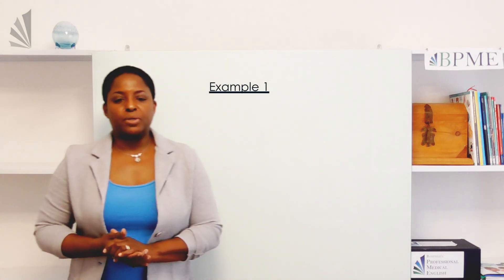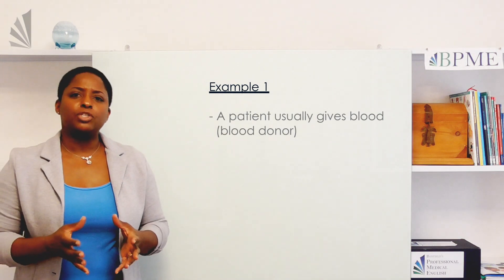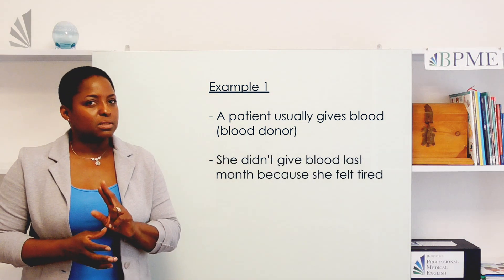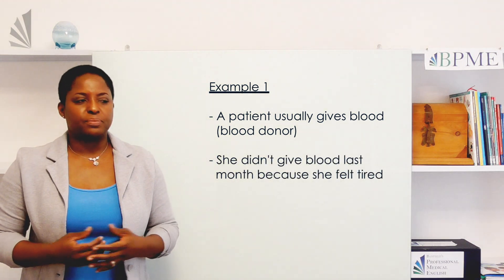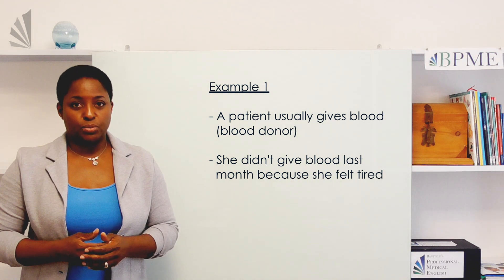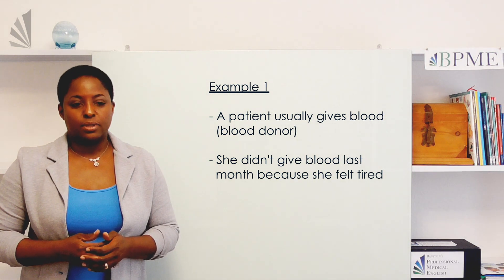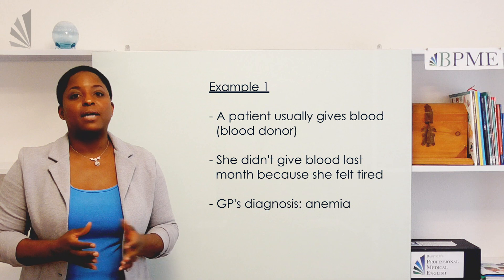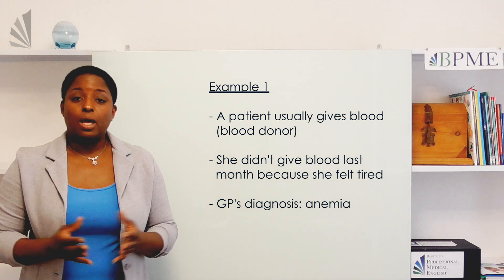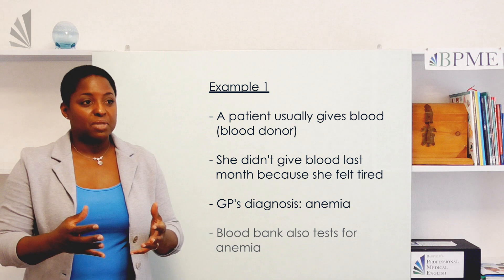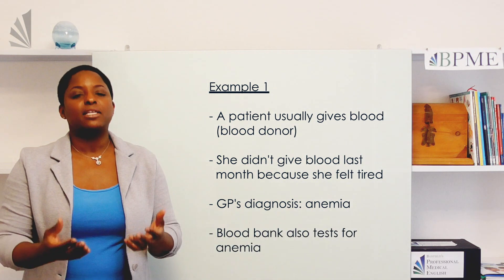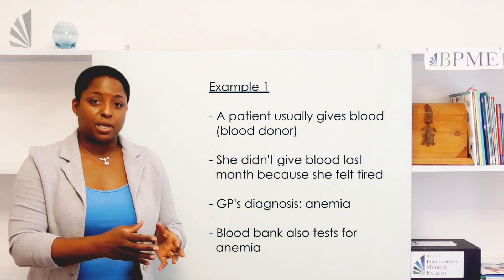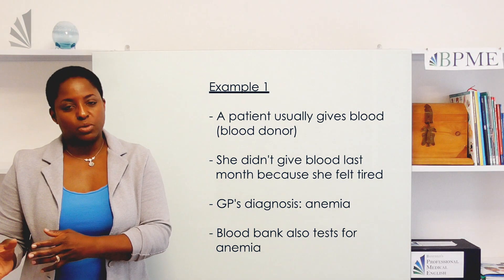So let's try an example. Say you have a patient who usually gives blood at the blood bank. However, last month she didn't because she felt tired. This month she comes to you still tired. You examine her, take her blood, and you discover that she has anemia. However, we know that anemia is something they test for at the blood bank when people give blood.